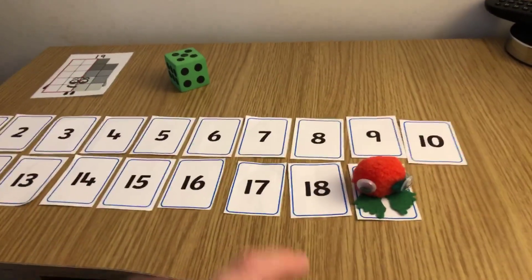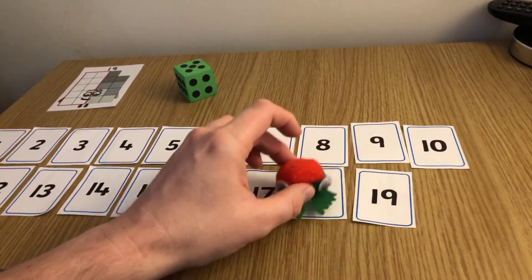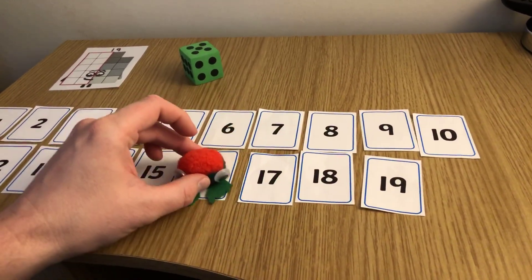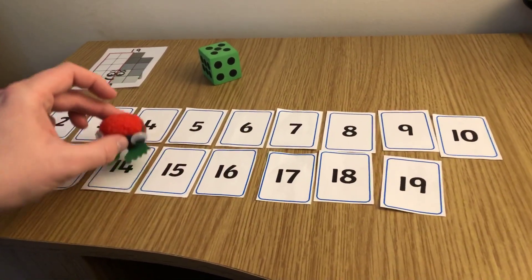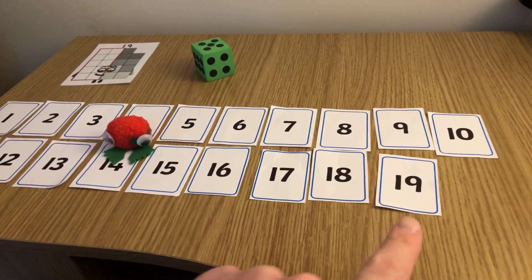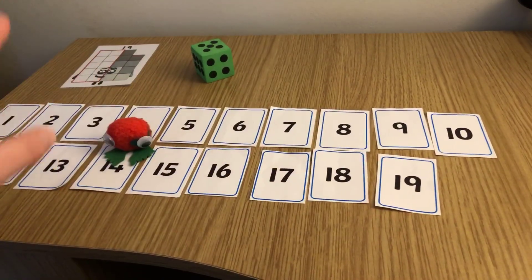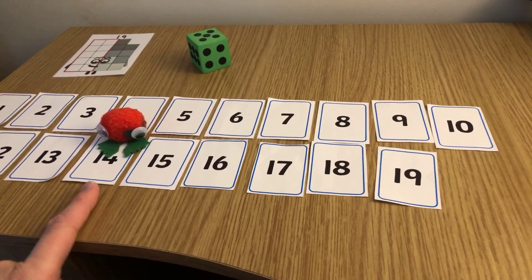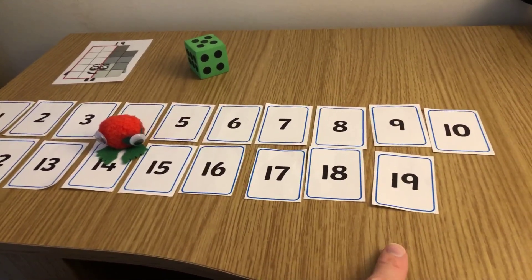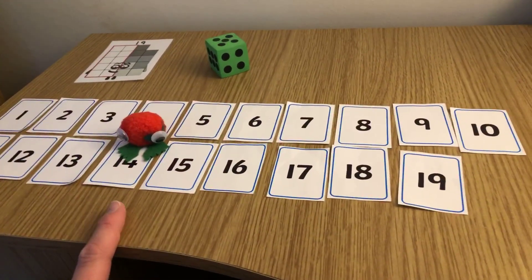Alright, let's see which number it's going to land on. 1, 2, 3, 4, 5. So 19 take away 5 is 14. 19 minus 5 is 14.